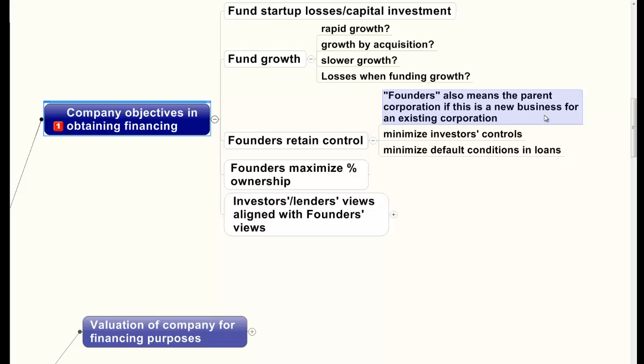Founders want to minimize investor controls, yet investors want to maximize their controls, although sophisticated investors are ordinarily satisfied with having veto powers rather than having the affirmative ability to dictate to the corporation what it must do. If there's borrowing involved, the founders want to minimize the default conditions that would create a default in any loans or borrowings the company has. The founders also want to maximize their percentage ownership, which equates to valuation — we'll cover that in a few minutes.